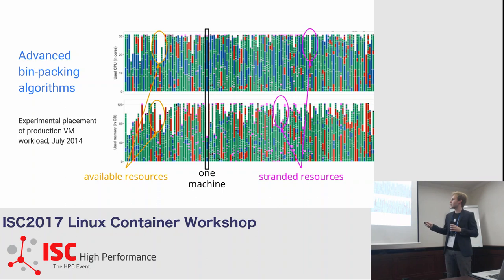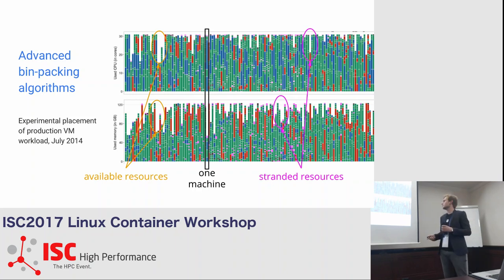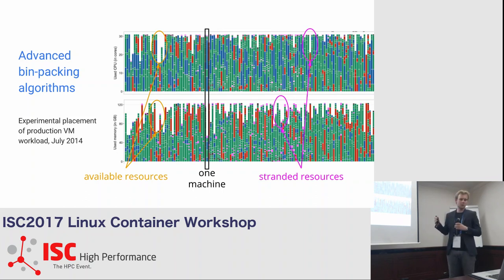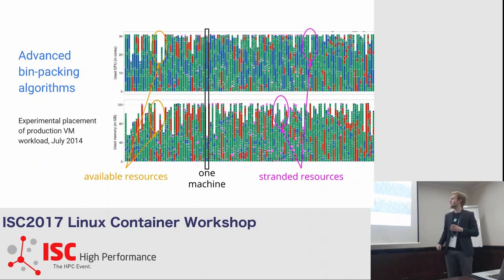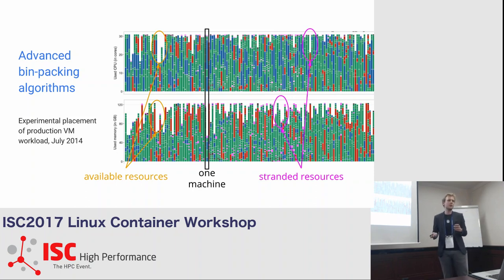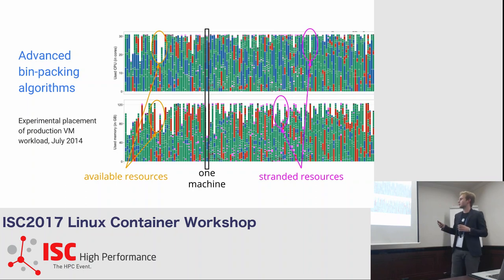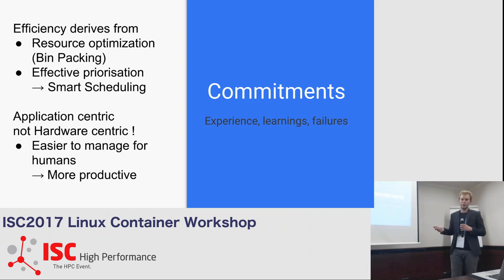This is a graph of memory and CPU utilization, which is very important because we want to use as much resources as we can. We need to balance memory and CPU — when we don't have memory, we can't use CPU resources, and vice versa. Because of this, we try to schedule jobs very smartly so that we can make use of a lot of resources.